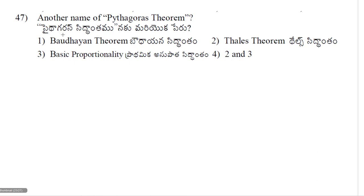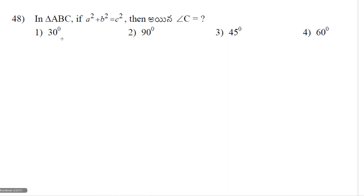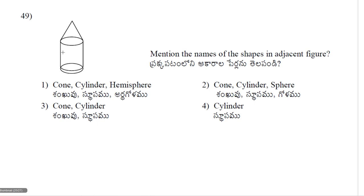47th problem: Another name for Pythagoras theorem is the Baudhayana theorem — option 1. Next, in triangle ABC, if a² + b² = c², then angle C equals 90 degrees. This is a very simple and direct question — option 2 is correct.